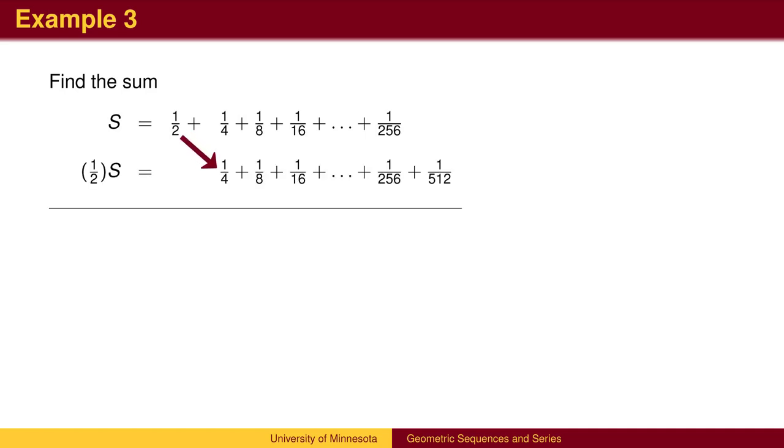Notice that every term in the series shifted one spot to the right. We can now subtract the two series. Everything cancels except for the first term and the last term. We can then solve for s.